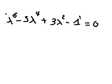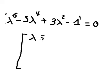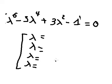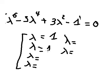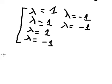We need to find the solution of the characteristic equation. Using a calculator, we find that lambda equals the following values. So we have the final answer beginning with c one times e to the power of lambda s.